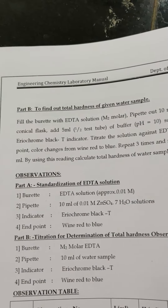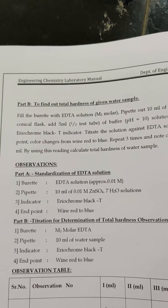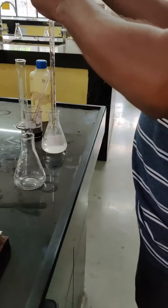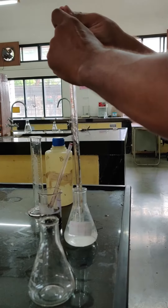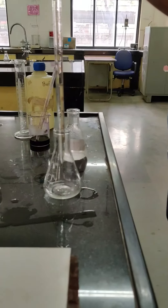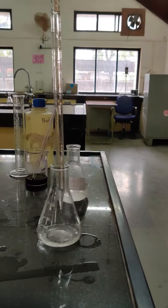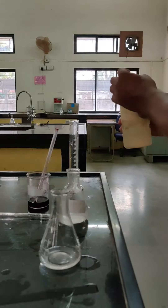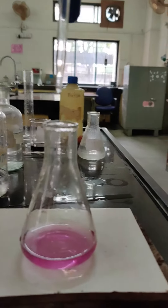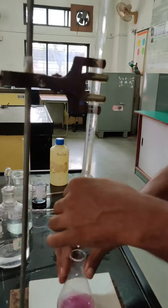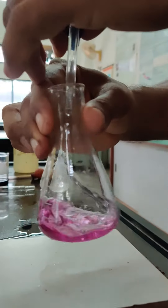Now the second part is the titration to find out the total hardness of the given water sample. We do the same process again: take 10 ml of hard water sample with the help of a pipette into the conical flask, then add 5 ml of buffer solution and a few drops of EBT indicator. On adding EBT indicator, you get a wine red or pink colour. Then we start adding EDTA solution from the burette until the end point, where we get blue colour.